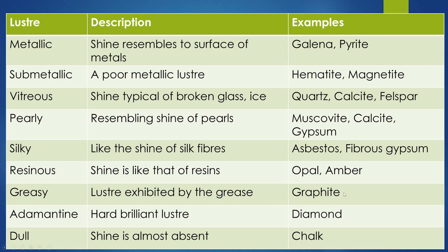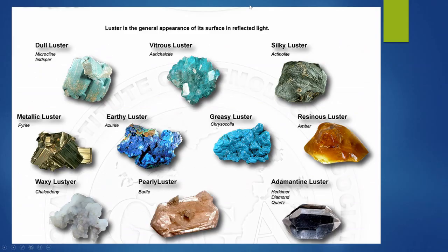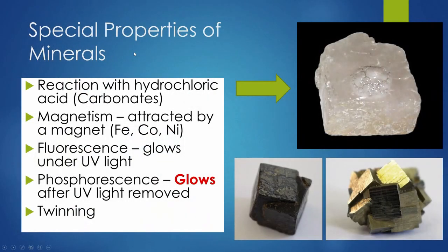Graphite — your pencil lead, which isn't lead at all but graphite with clay — has a greasy luster. Pure graphite actually feels and looks greasy. Special properties: calcite will bubble if you put a little bit of weak acid on it. Fluorescence is cool — if you go in a dark room and shine UV light on a mineral, you get a fluorescence effect.